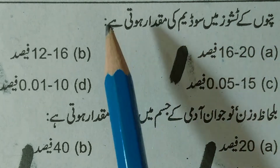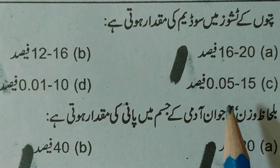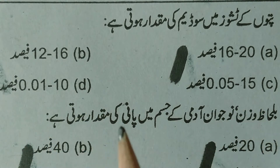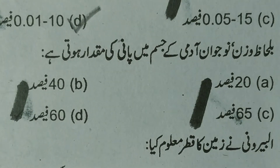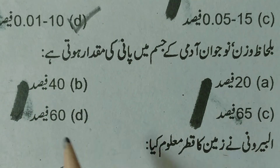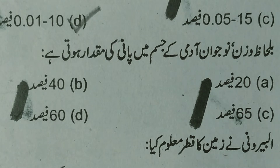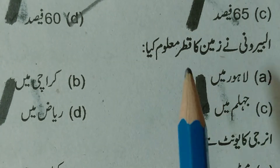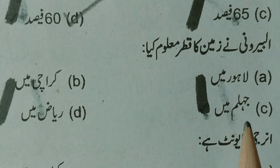MCQ 1: Sodium in the tissue — options are 16 to 20%, 12 to 16%, 5 to 15%, or 0.1 to 10%. The answer is 0.1 to 10%, so option D is the right answer. MCQ 2: Option D is the right answer — 60%. MCQ 3: Al-Biruni measured the diameter of the Earth — options are Lahore, Karachi, Jhelum, or Riyadh. Al-Biruni measured the Earth's diameter at Jhelum, so option C is the right answer.